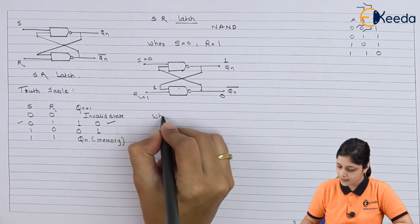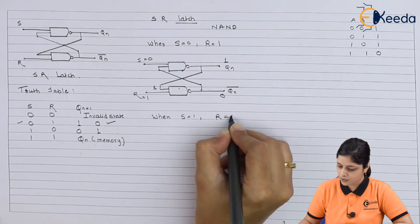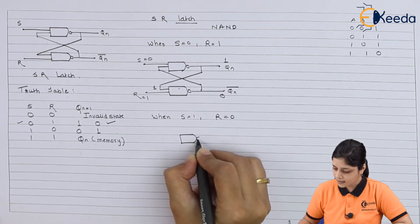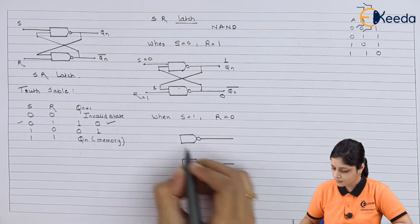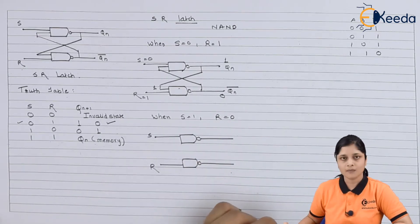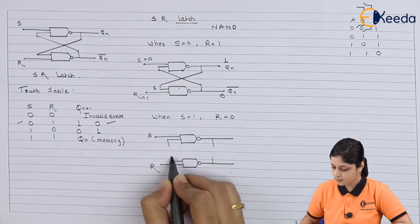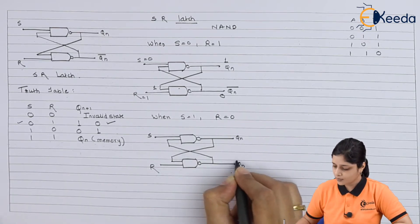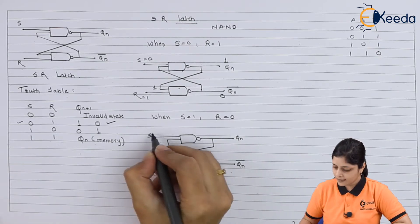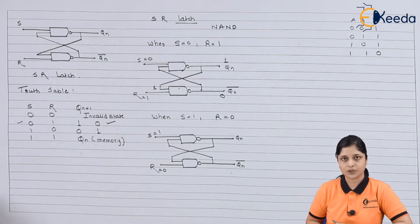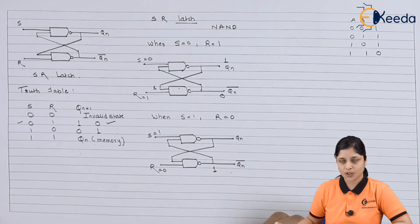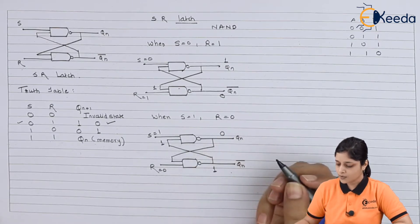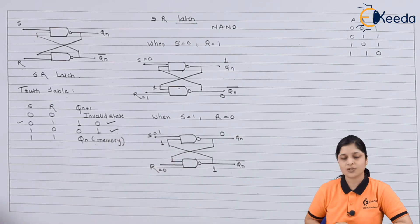Next, when S=1 and R=0, we draw the SR latch again with S and R inputs and connections for Qn and Qn bar. When S=1 and R=0: since any input of 0 gives output 1, that 1 feeds into the second gate. With both inputs of the second NAND gate being 1,1, the output is 0. So for S=1, R=0 we get Qn=0 and Qn bar=1. This condition is also verified.